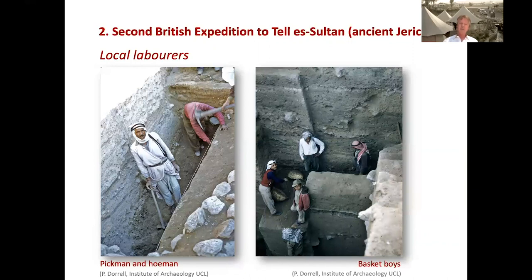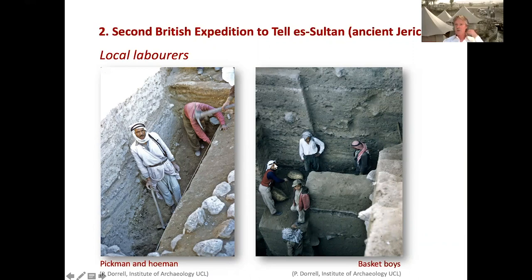It is clear that every field season a large number of local laborers was involved in the dig, and that the workmen were divided into three categories. First of all, the pickmen, who loosened the hard soil with a pickaxe — you can see one standing here with a pickaxe. Secondly, the hoemen, who scraped the loosened earth together with a hoe and scooped it into baskets. And the third category, the basket men, or more often the basket boys, who carried away the debris in baskets to the dump. We even have information about the salaries, which seem to be related to these different ranks of pickmen, hoemen, and basket boys.